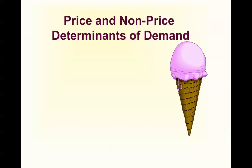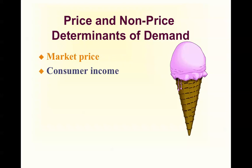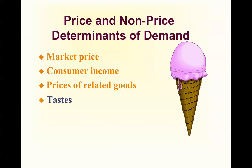These determinants are: the price determinant is market price; non-price determinants include consumer income, prices of related goods such as complements or substitutes, tastes — do you like the good or not — and expectations, meaning what do you think is going to happen in the future.